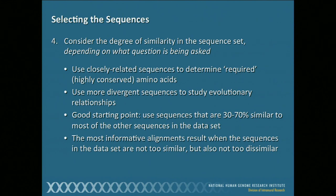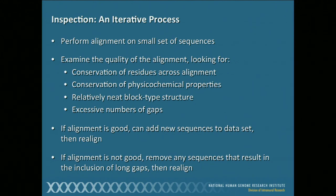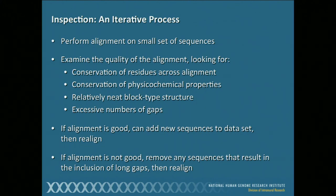If all sequences are too similar, you won't learn anything new. If they're too divergent, you may not be able to align them at all. When examining the alignment, look for: conservation of residues across the alignment, conservation of physicochemical properties, a relatively neat block-type structure, and you do not want an excessive number of gaps. Similarly to our BLAST discussion, gaps represent biological events — insertions or deletions. This cannot be approached like a word processing exercise where you just put in dashes to make it look better. You must have a rationale. Inspection is absolutely necessary.